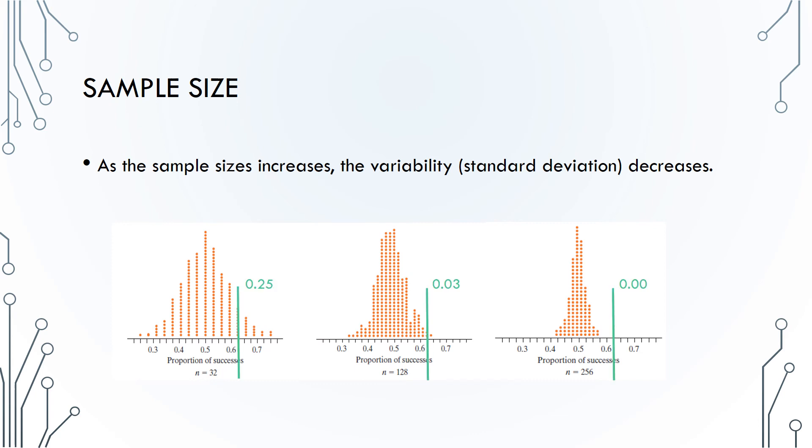If you add an observed sample proportion of 0.62 to each plot, you can get a p-value for each sample size. The observed result is not changing, but since the variability decreases, there are fewer dots in the tail beyond the statistic as you increase sample size. So increasing sample size results in smaller p-values or stronger evidence against the null hypothesis, as long as the sample proportion remains the same and is in the direction of the alternative hypothesis.